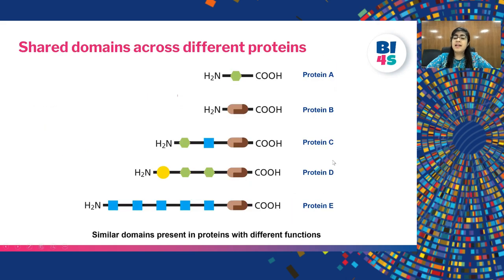This is an example of how a particular domain can be present across different proteins. The brown color domain is shared in proteins B, C, D and E, whereas the green domain is common in proteins A, C and D. All of these proteins have unique functions to play but can still share domains.